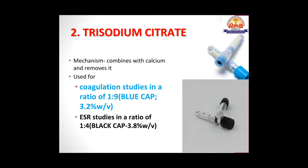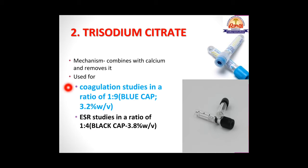Blue and black vacutainers contain trisodium citrate, which combines chemically with calcium and removes it, acting as an anticoagulant. The blue cap vacutainer contains 3.2% w/v sodium citrate with anticoagulant-to-blood ratio of 1:9, while the black top vacutainer contains 3.8% w/v trisodium citrate with a ratio of 1:4. This is an important viva distinction. The blue vial is used for coagulation studies and the black vial is used for ESR studies.